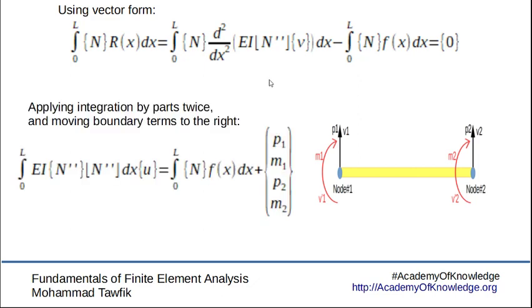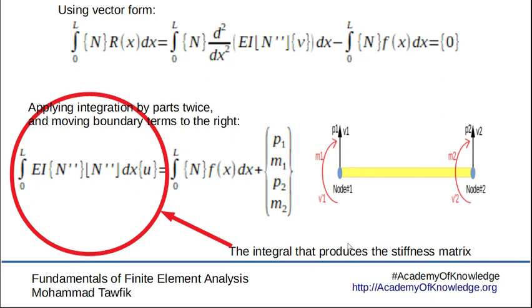Again, we apply the integration by parts twice to get this term which will create our stiffness matrix. Also when we apply the integration by parts on this term, we got the boundary terms from which we could write this vector, the loading vector, which has the lateral forces and the moments applied at the end nodes of the element.